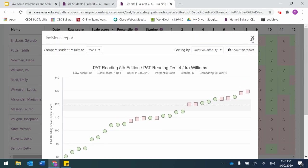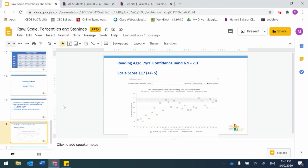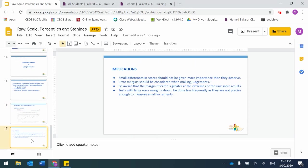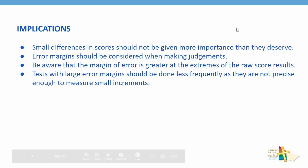The error margin means that a child could sit a similar test two days apart and achieve results at either end of that margin. Small differences in scores shouldn't be given more importance than they deserve, and we need to be mindful of the error margin when making judgments. We need to be aware that the margin of error is greater at the extremes of the raw score results. Tests with large error margins should be done less frequently as they're not precise enough to measure small increments. For people at the extremes, we may need to do some follow-up testing to get a more accurate result.